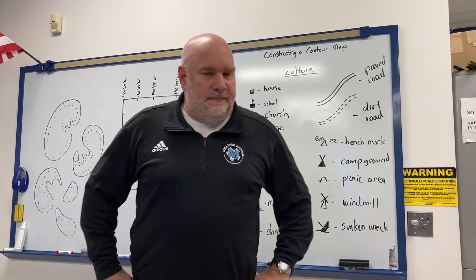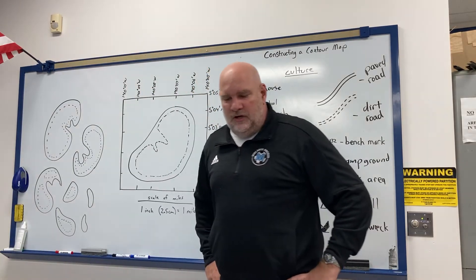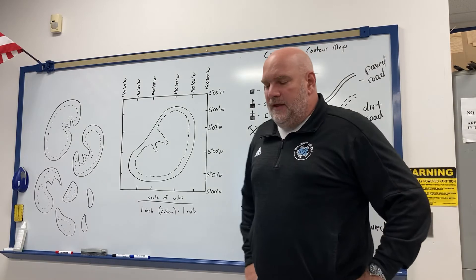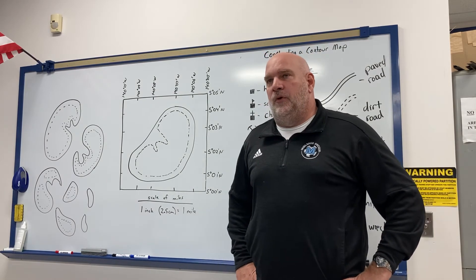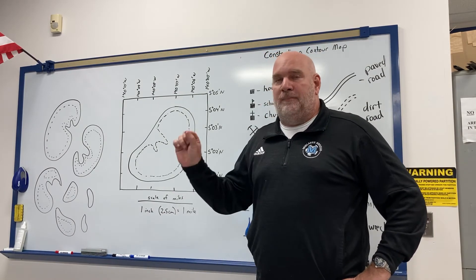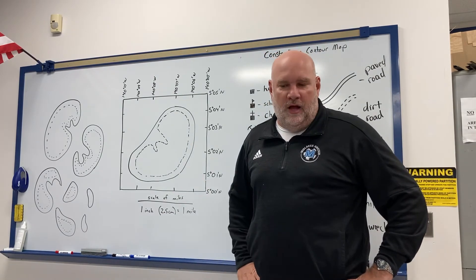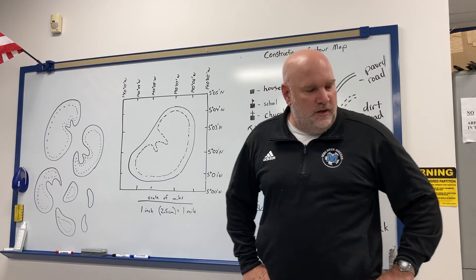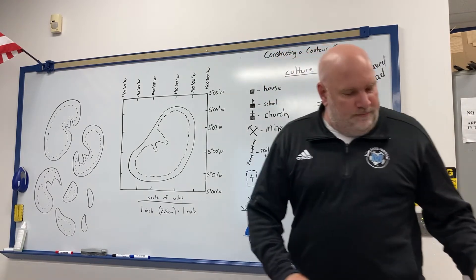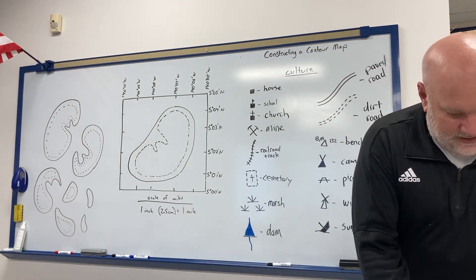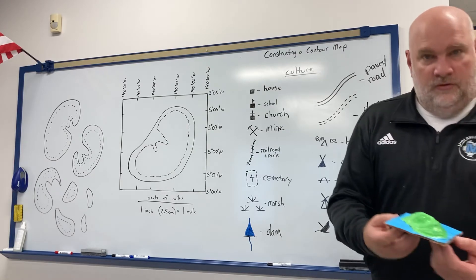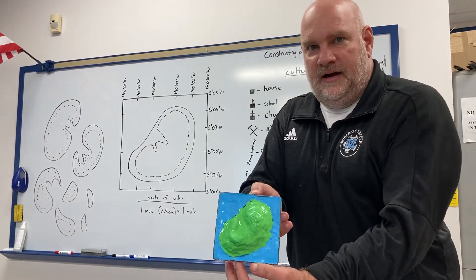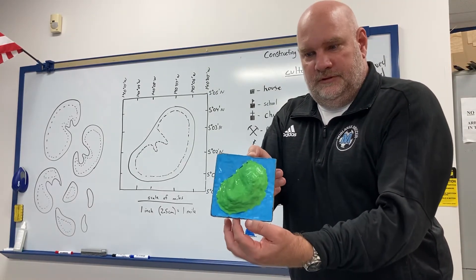What we're going to do today is construct a contour map and then place the proper symbols at certain coordinates on the map. We're basically making a contour map to represent this island right here.